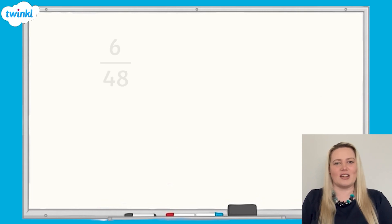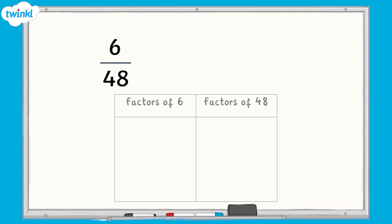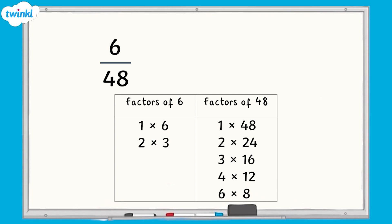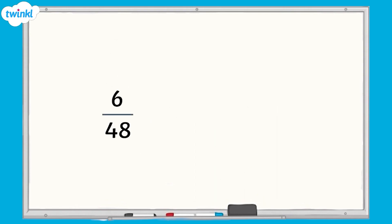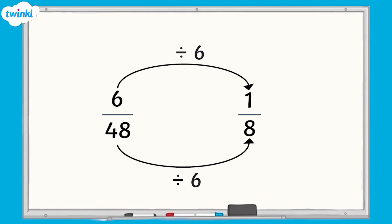Let's see if we can simplify this fraction: six forty-eighths. The first step is to find the factors for the numerator and the denominator. The factors of 6 are 1, 2, 3 and 6. The factors of 48 are 1, 2, 3, 4, 6, 8, 12, 16, 24 and 48. The common factors are 1, 2, 3 and 6. Therefore, the highest common factor for both numbers is 6. The next step is to divide the numerator and the denominator by the highest common factor. 6 divided by 6 equals 1, and 48 divided by 6 equals 8. So six forty-eighths in its simplest form is one eighth.